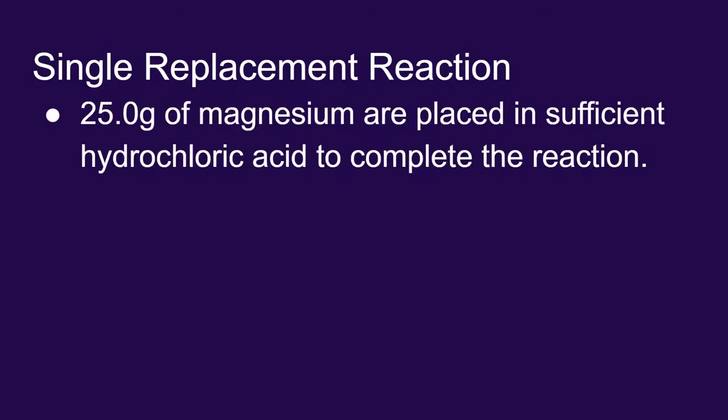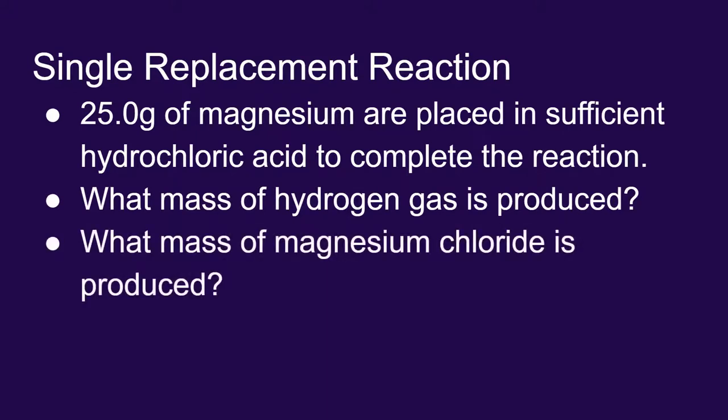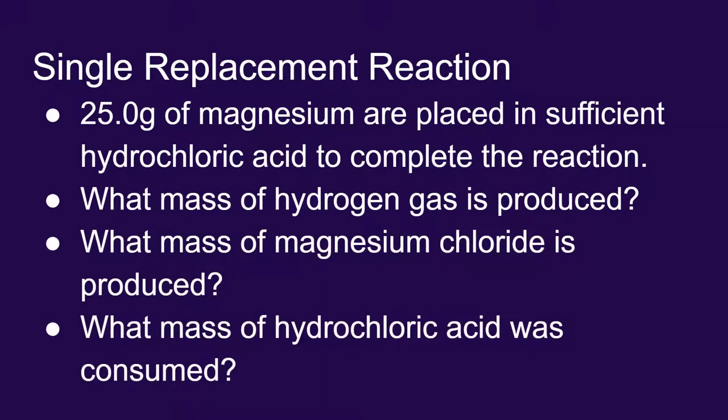Here's the setup. I put 25 grams of magnesium and I place it in enough hydrochloric acid to complete the reaction. I would like to know the mass of hydrogen gas produced, the amount of magnesium chloride produced, and what amount of hydrochloric acid was consumed in the reaction.